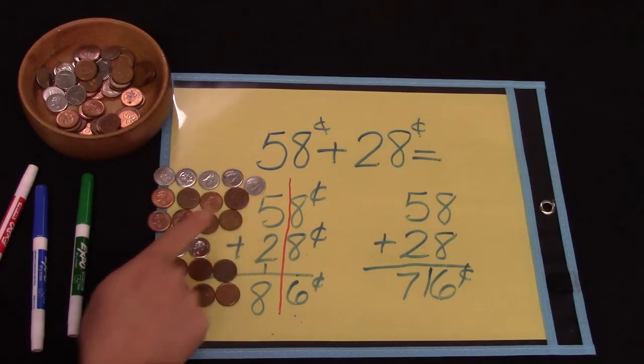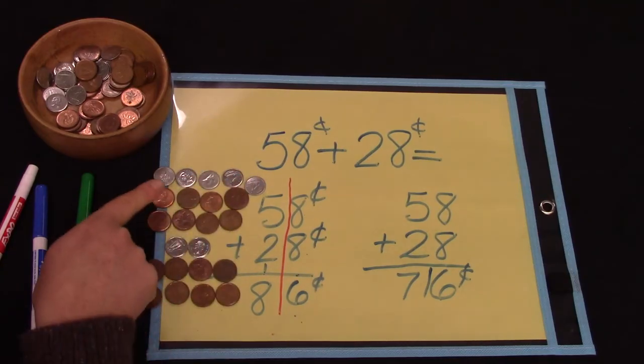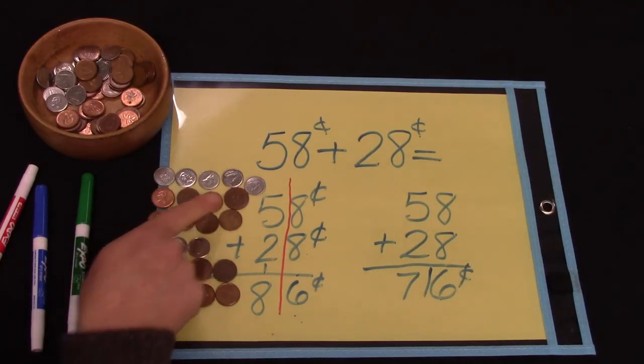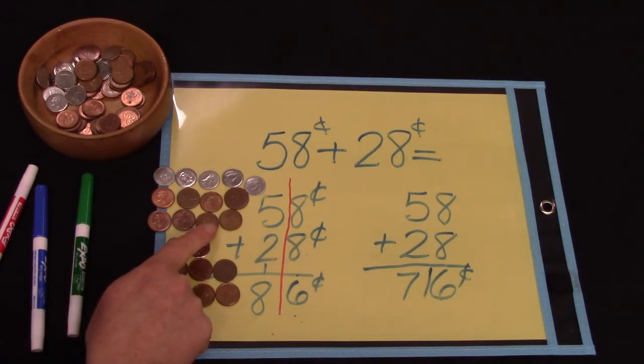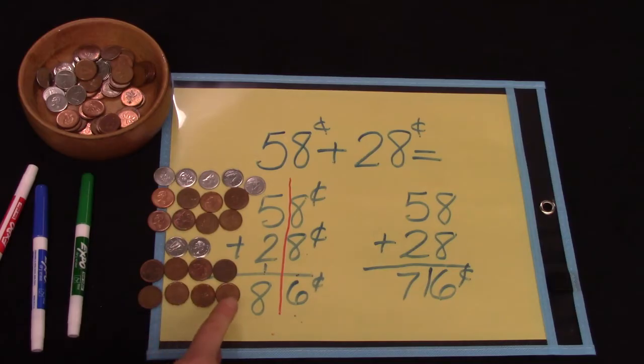We're going to count all of our dimes first: 10, 20, 30, 40, 50, 60, 70, 71, 72, 73, 74, 75, 76, 77, 78, 79, 80, 81, 82, 83, 84, 85, 86. Do you know why?